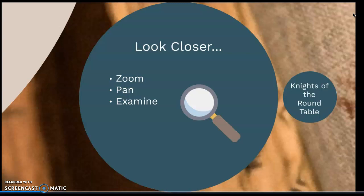Many image viewers have the ability to pan and zoom on digital images, allowing for a close-up look at objects that may have small or hard-to-see details. This can allow for an even closer examination of items that may be kept under glass on display, or might not even be on display at all due to the item's fragility.